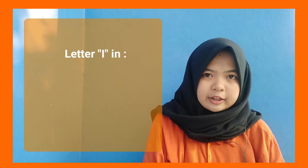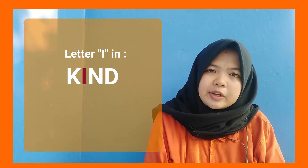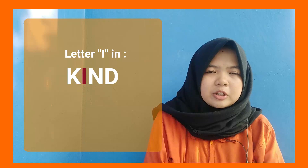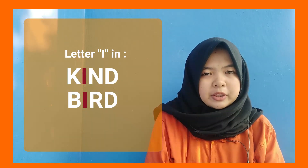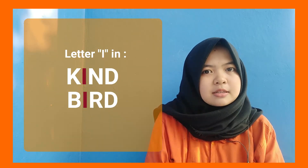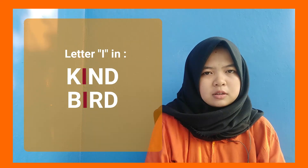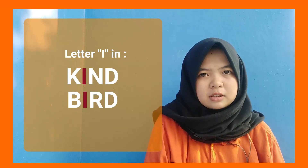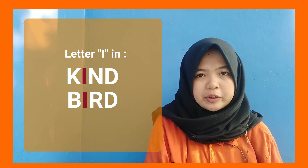For example, the letter 'I' in the word 'kind' is pronounced as /aɪ/, but in the word 'bird', the letter 'I' is pronounced as /ɜː/. So both of these two words have the letter 'I', but the two are pronounced in a different way.